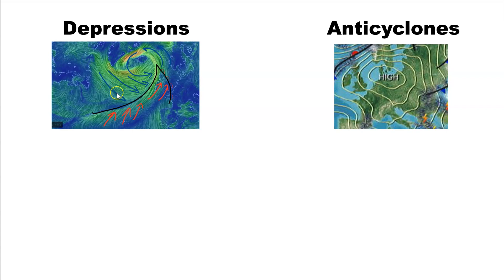Now remember, depressions are formed whenever you get your PM, your polar maritime air, meeting your tropical maritime air here. They don't mix, the front forms between them, and that organizes itself into that anticlockwise circulation of air with your warm front, your warm sector, your cold front, and after the cold front.